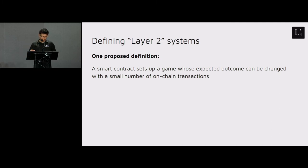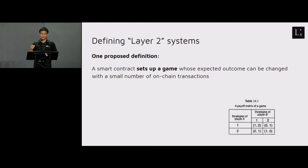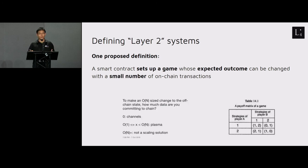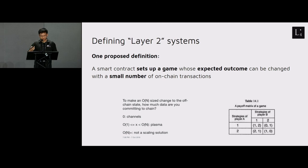We can unpack three important phrases in that definition. When I say "set up a game," it means it implements the payoff matrix for some game in the game theory sense. "Expected outcome" means how participants in the game are expected to behave — for example, what is the Nash equilibrium of the game. "A small number of on-chain transactions" means we compare the number of on-chain transactions required to progress the Layer 2 state versus how much the Layer 2 state actually changes.